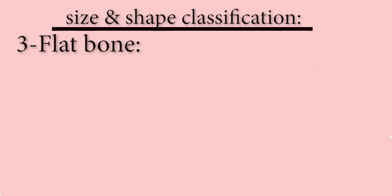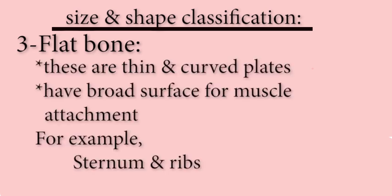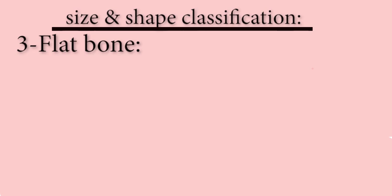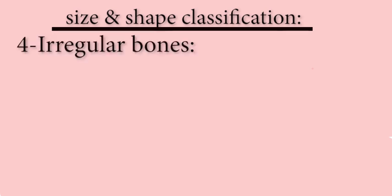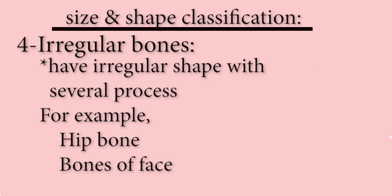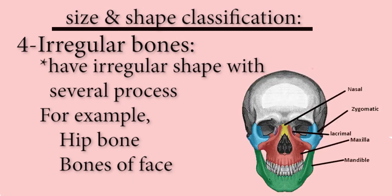Flat bones are thin and curved plates. They have a broad surface for muscle attachment; for example, sternum and ribs. Irregular bones have an irregular shape with several processes; for example, hip bone and bones of the face.